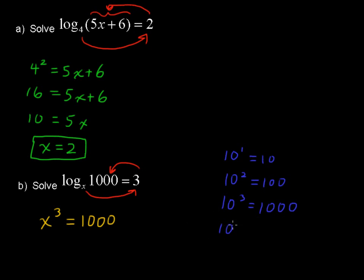10 to the fourth then would be 1 with 4 zeros after it or 10,000 and so on and so forth. So we have our 1,000 here. 10 to the third is 1,000. And so that gives us our answer that x must equal 10.